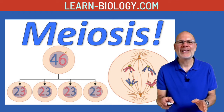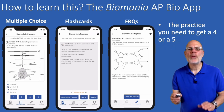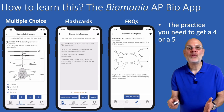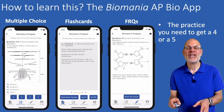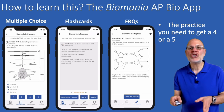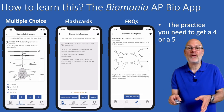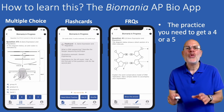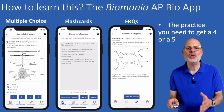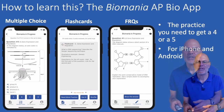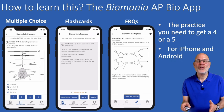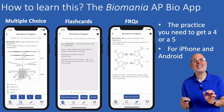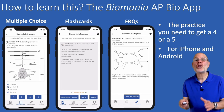Download the Biomania AP Bio app. It has hundreds of multiple choice questions, flashcards, and FRQs that will get you ready for the AP Bio exam. In fact, the question we just discussed comes from one of the FRQs on my app. Think about how well you do on the AP exam if you knew the answers to all those questions. It's for iPhone, it's for Android. The download is free and an in-app purchase of just $6.99 unlocks all the content.